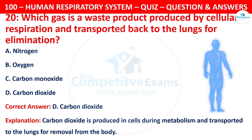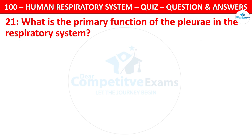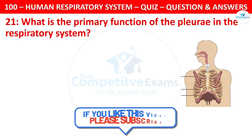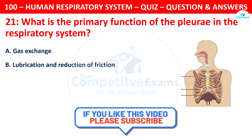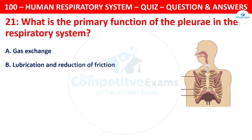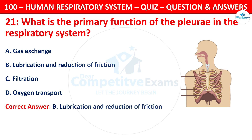Question 21. What is the primary function of the pleura in the respiratory system? Your options are: gas exchange, lubrication and reduction of friction, filtration, or oxygen transport. The correct answer is B, lubrication and reduction of friction.